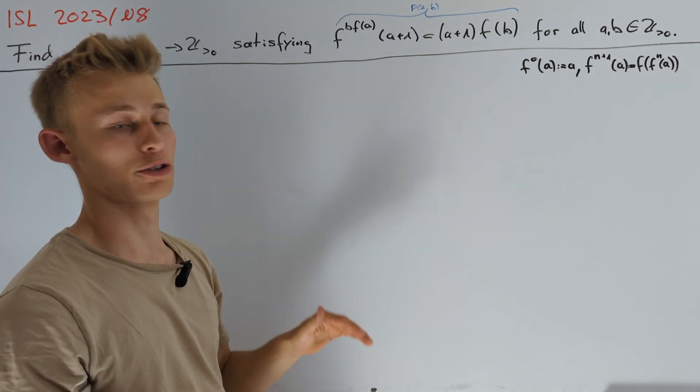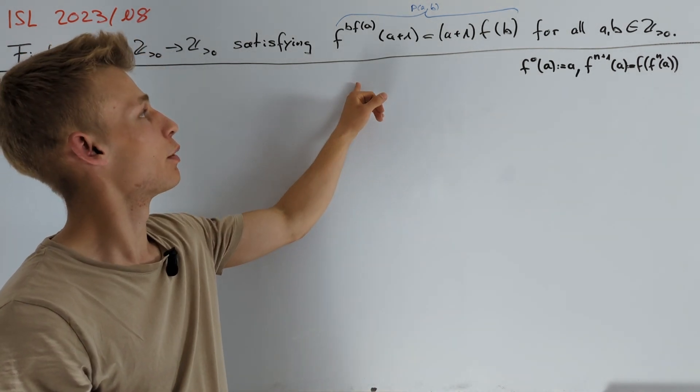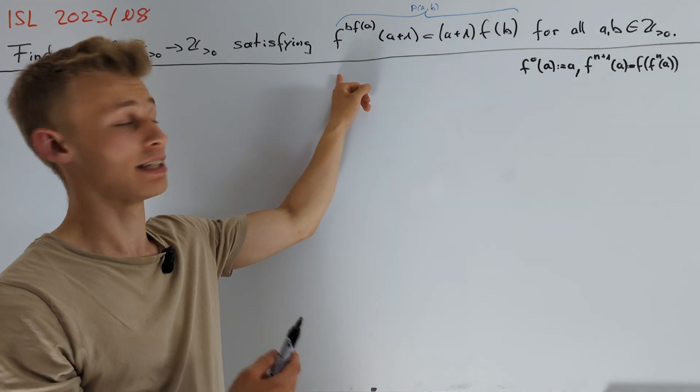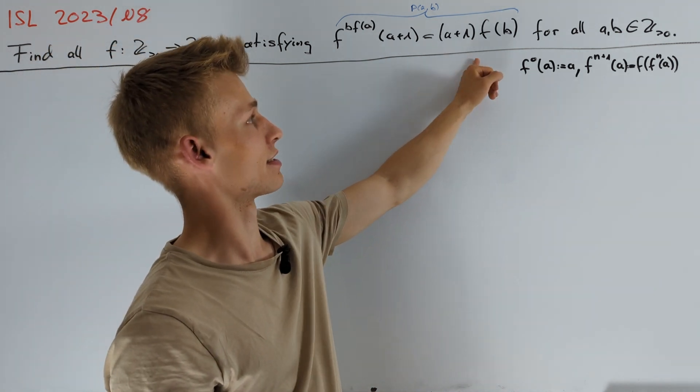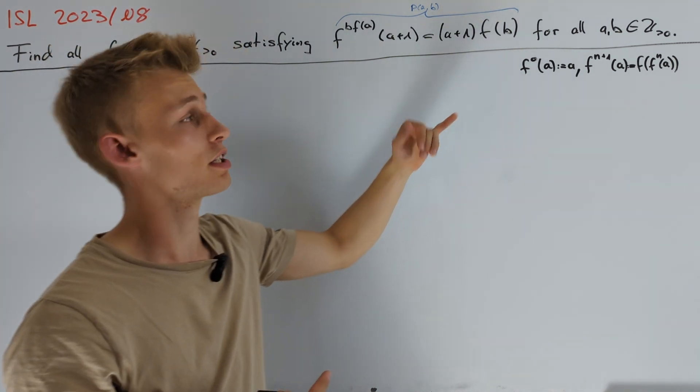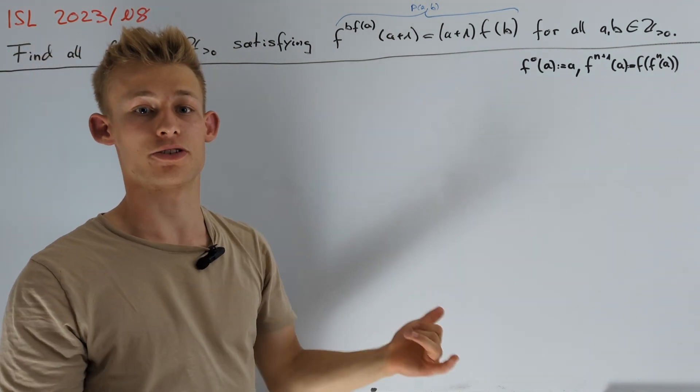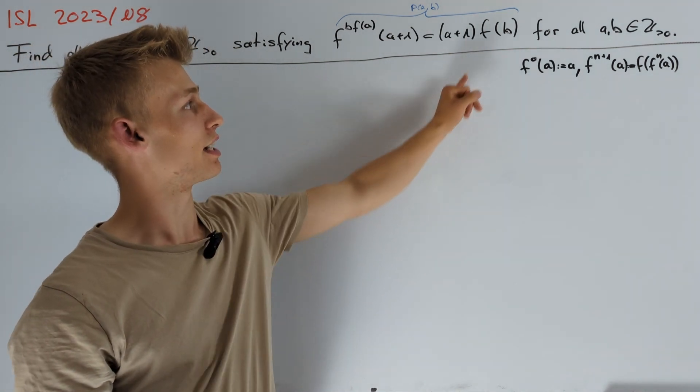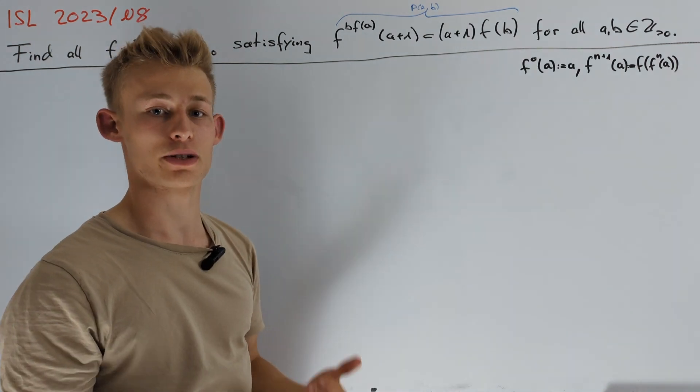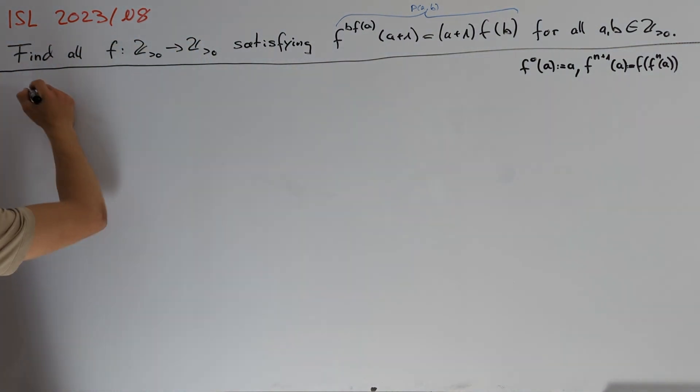And here, first of all, I want to note that on the left hand side we have f of something. And therefore, everything on the right hand side can be attained by our function f. We especially see that the factor a+1 on the right hand side can be arbitrarily large. And therefore, the right hand side can be arbitrarily large, which implies that our function f is unbounded.